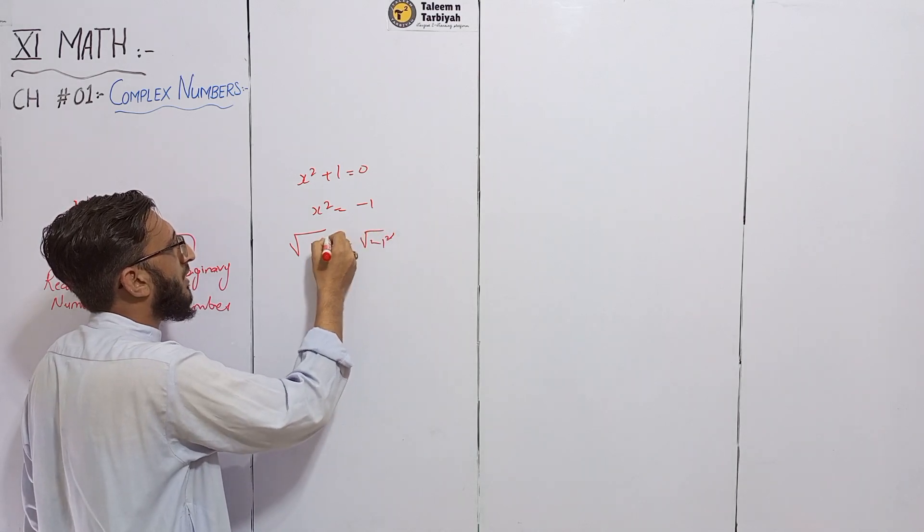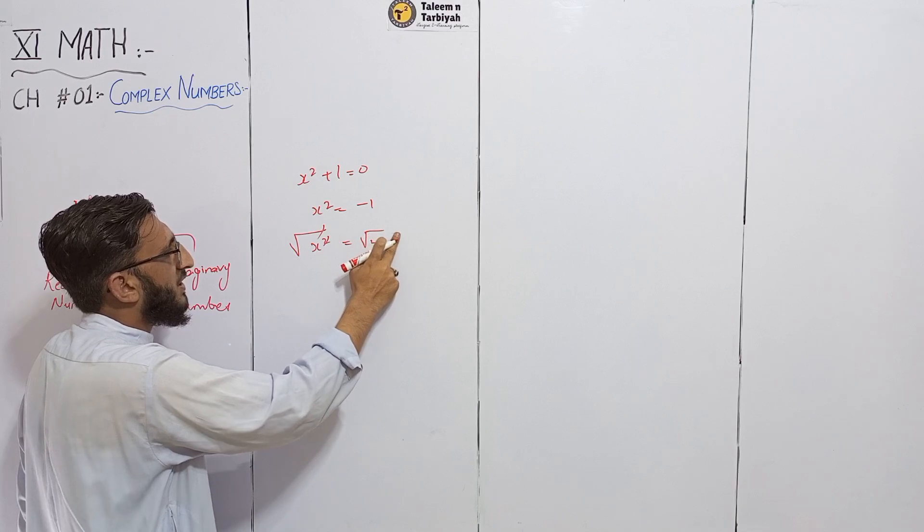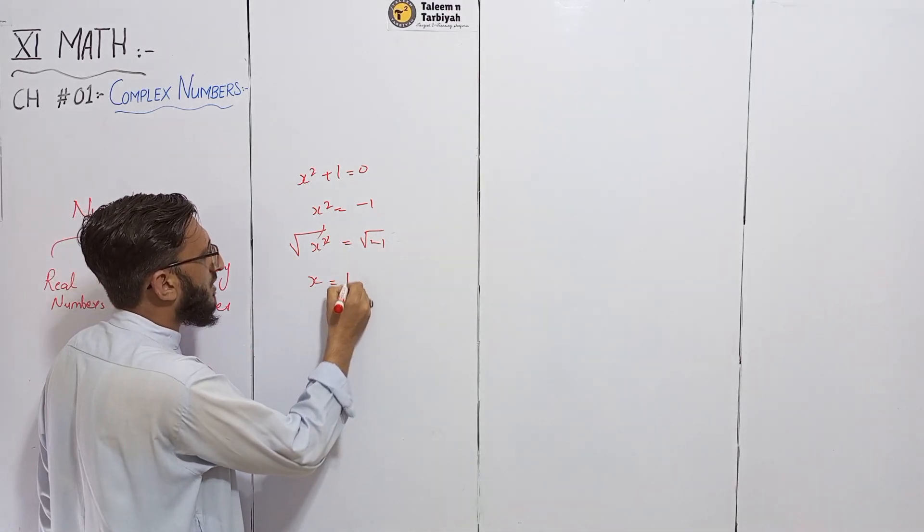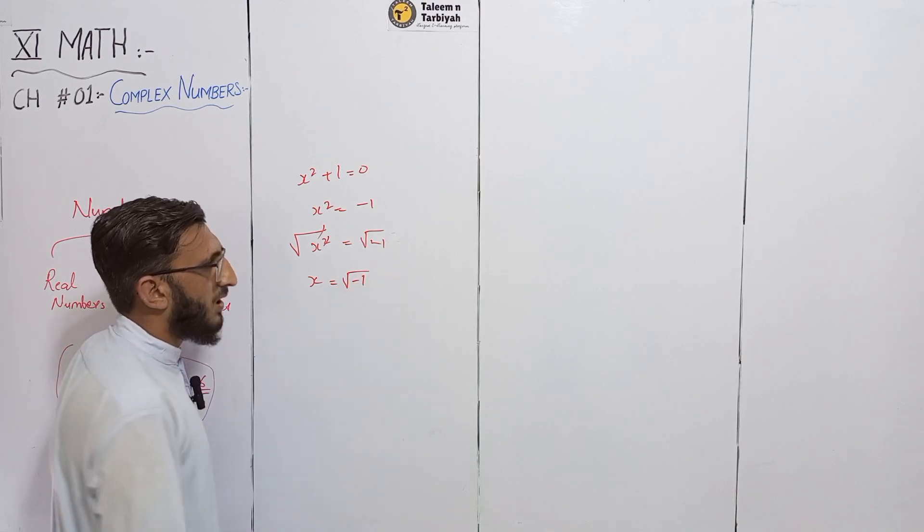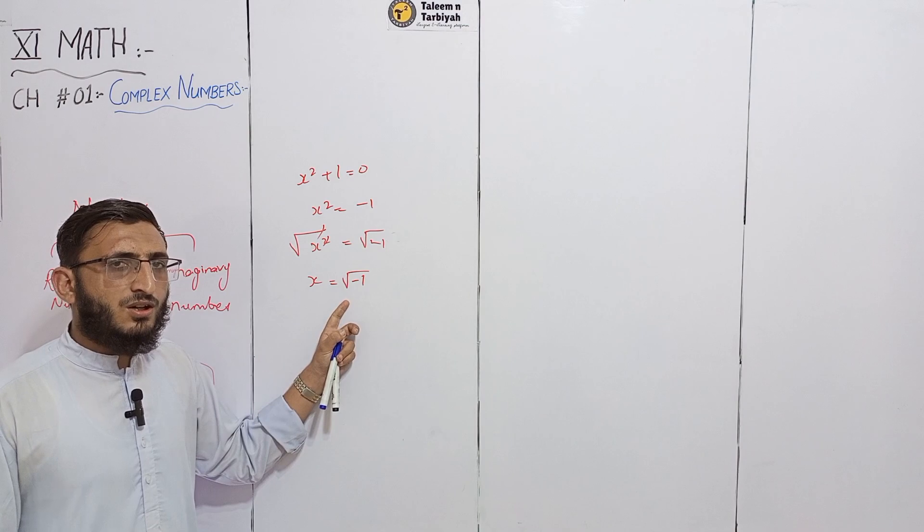Our x square is equal to minus 1. Now, you can write this as under root minus one.